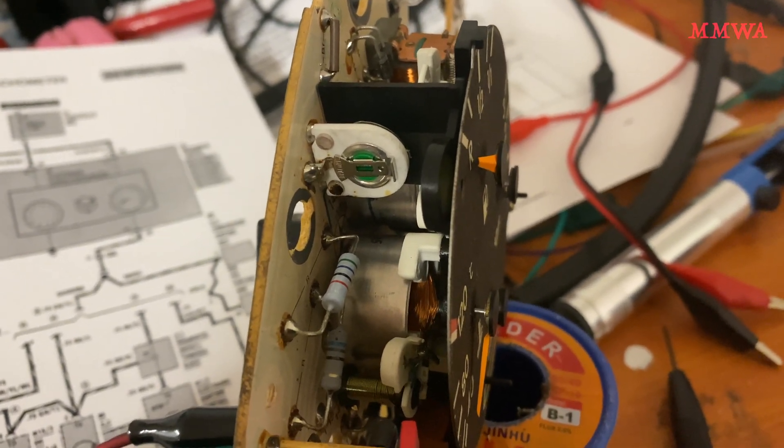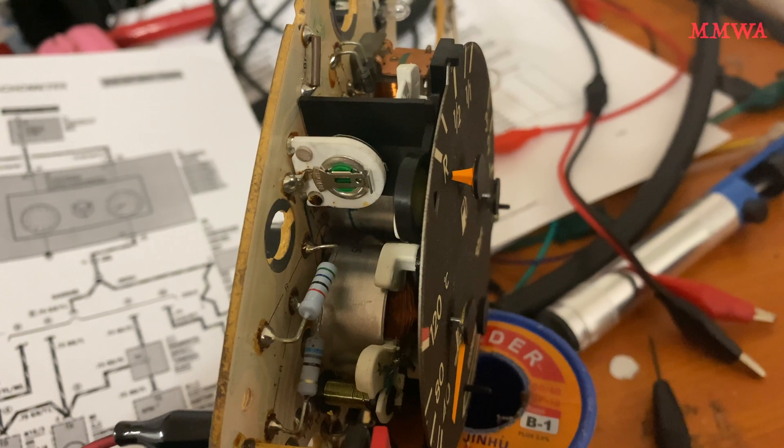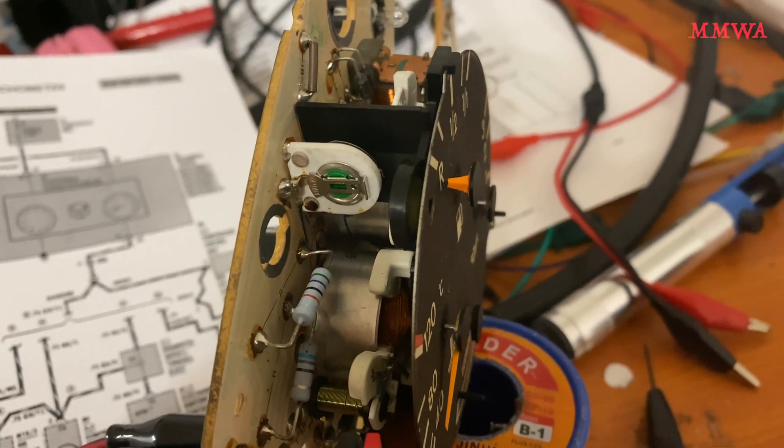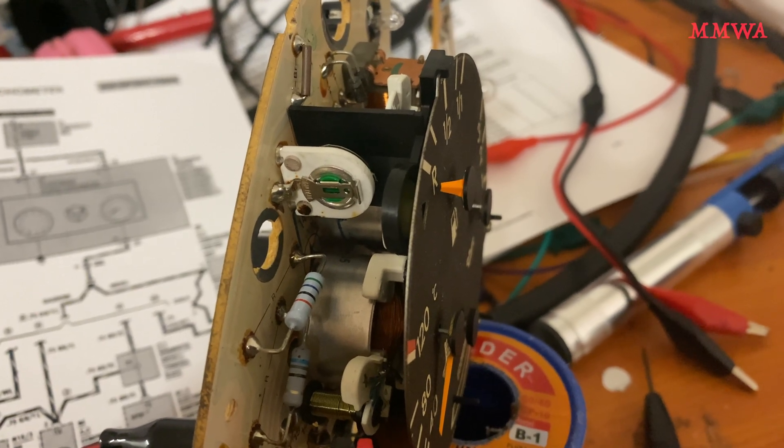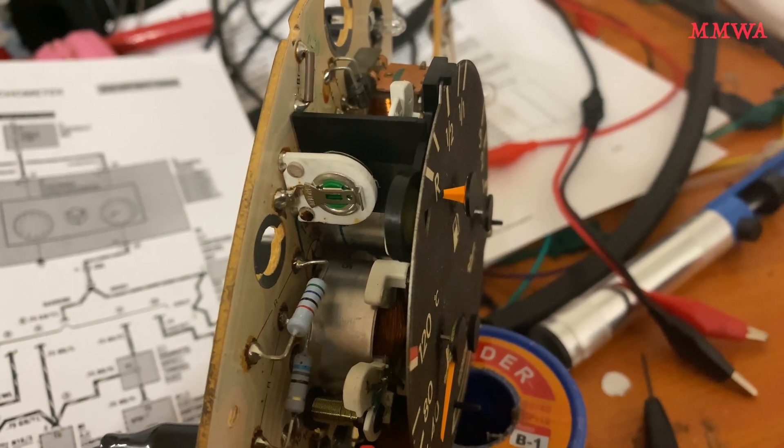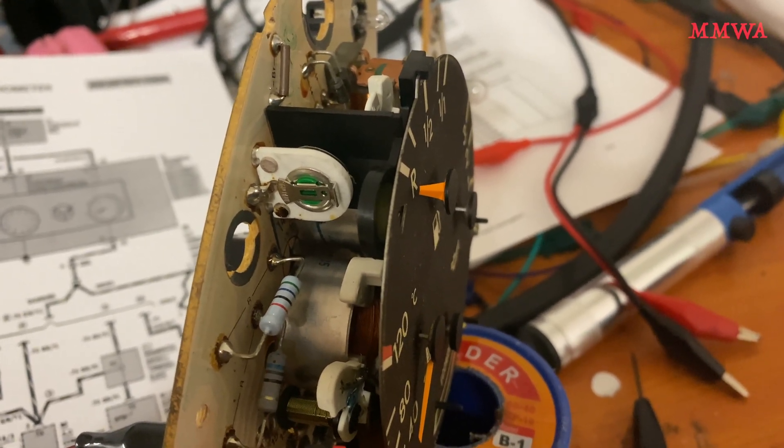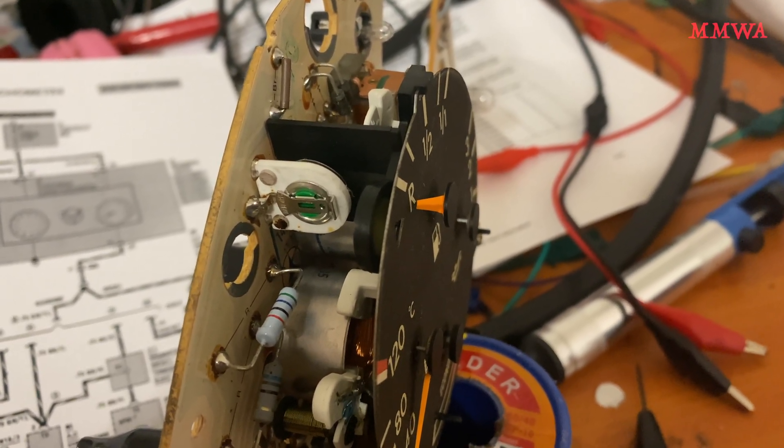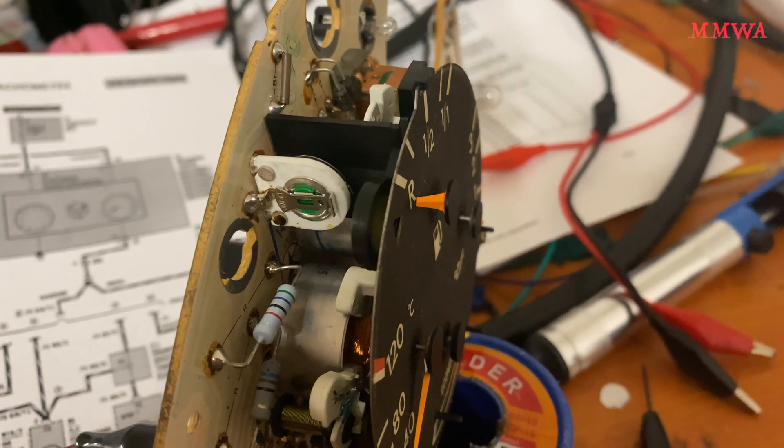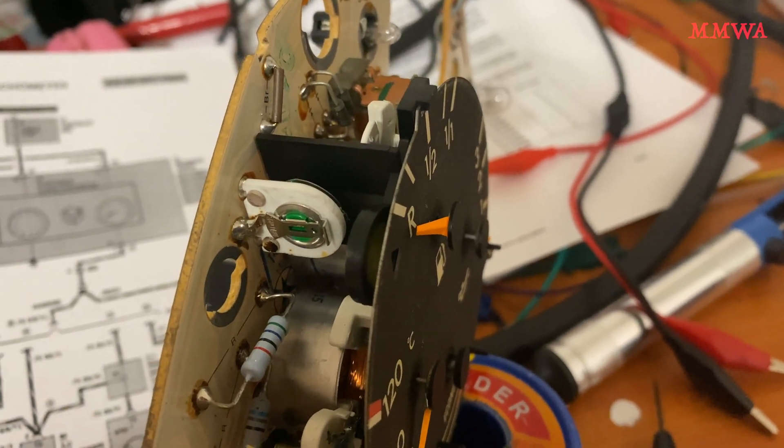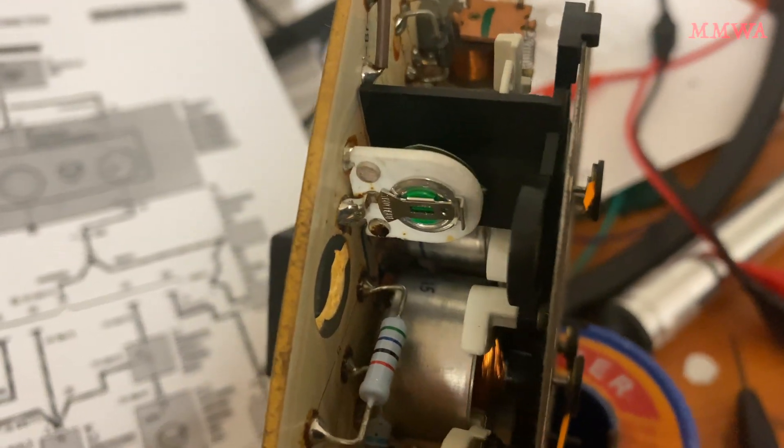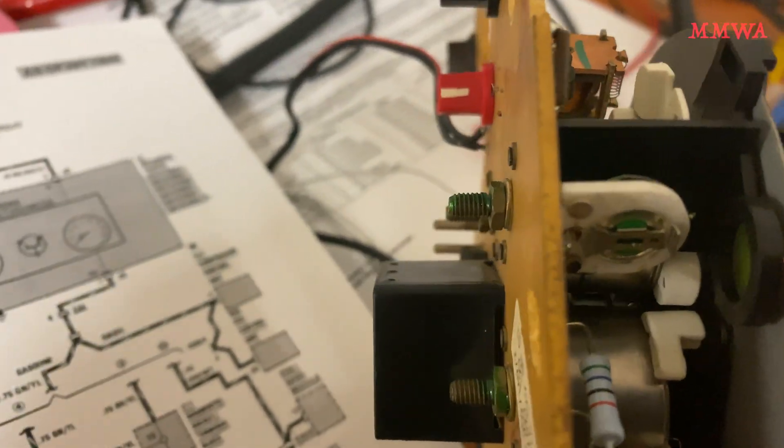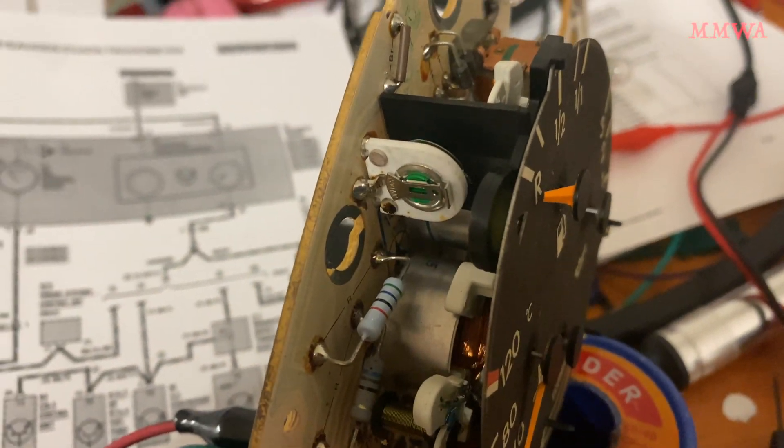Just another thing to note, potentiometers do get oxidized with age, so that is another point of failure as far as a flickering gauge is concerned. If you have already serviced or replaced your level sender in the fuel tank and you're still getting erratic behavior by the needle, it's entirely possible that potentiometer needs some deoxidant sprayed on it.